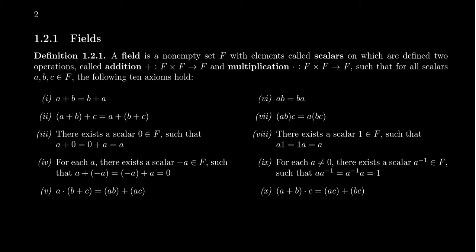The fourth and ninth properties are inverse properties — there exists some element for which, when you operate by it, you get the identity. Given any element a, there exists an element called negative a, which has the property that a plus negative a gives you the additive identity zero. So we can cancel addition by a by adding negative a. We require the same thing for multiplication: given any non-zero element, there must exist a multiplicative inverse so that a times a-inverse equals a-inverse times a, which equals one. Additive inverses use a negative symbol; multiplicative inverses use the superscript negative one, meaning one over a — the reciprocal.